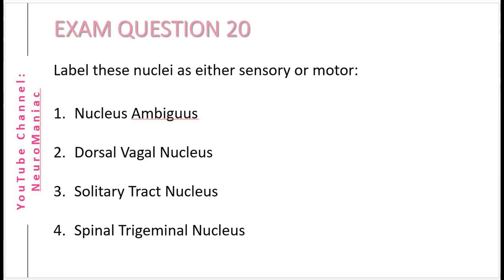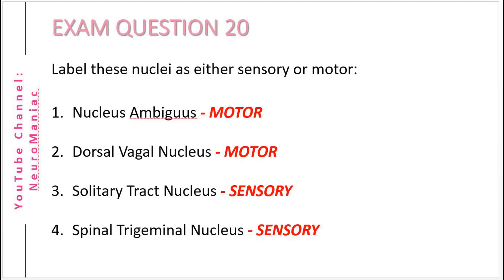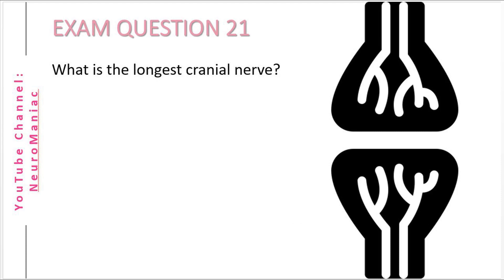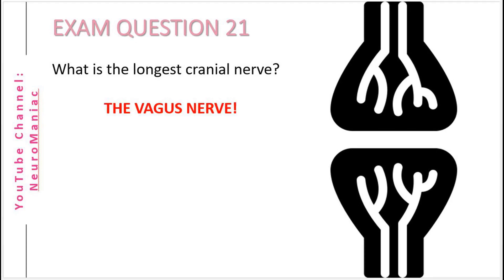Question 20: Label these nuclei as either sensory or motor. We've got the nucleus ambiguus, the dorsal vagal nucleus, the solitary tract nucleus, and lastly the spinal trigeminal nucleus. Question 21: What is the longest cranial nerve? Seeing as we've only discussed one nerve in this video so far, the answer is of course the vagus nerve.